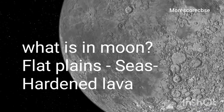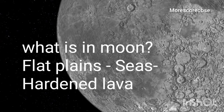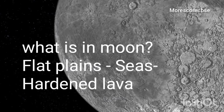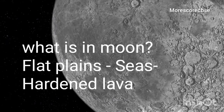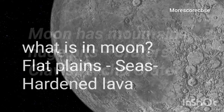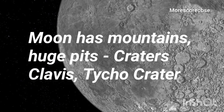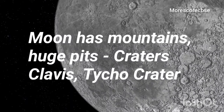What is in the Moon? Moon has flat planes called seas, which are made up of hardened lava. Moon also has mountains and huge round pits called craters on its surface.